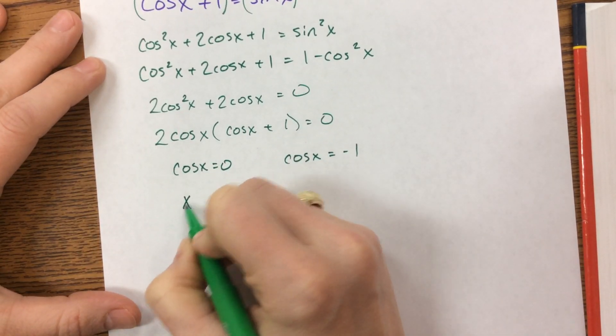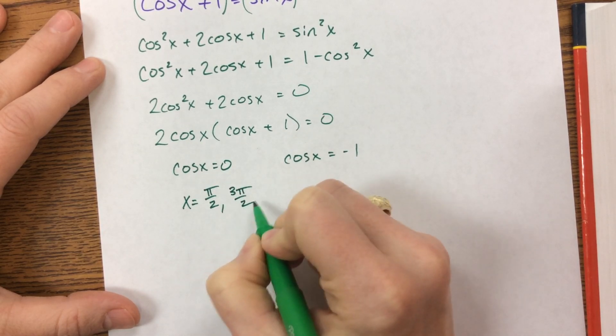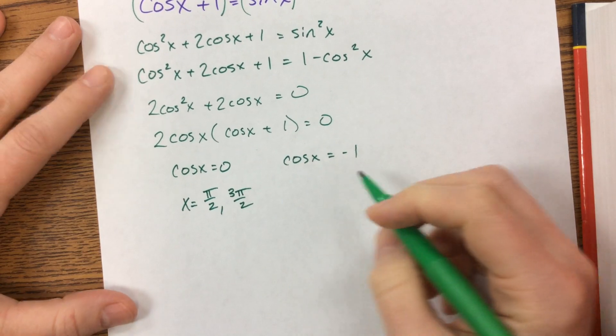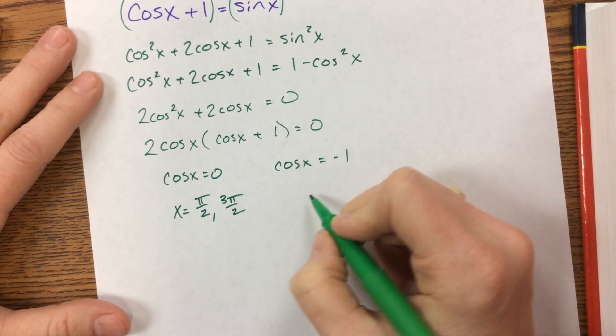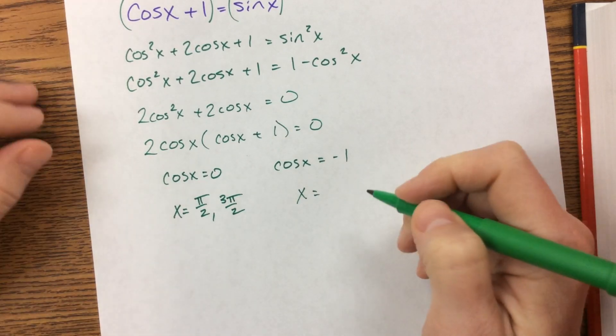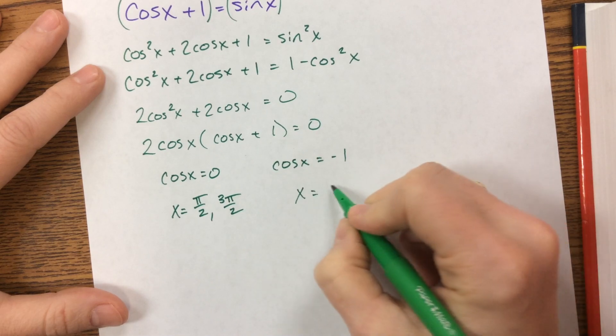It's equal to 0 at pi over 2 and 3 pi over 2. Oh, I didn't tell you in what world we're answering these questions, but either way. Okay, cosine is negative 1 at pi.